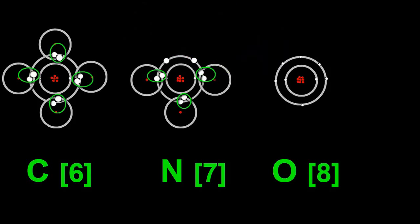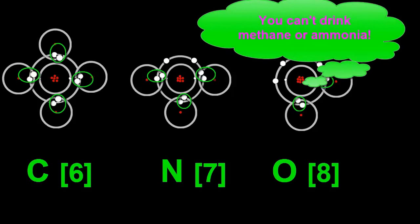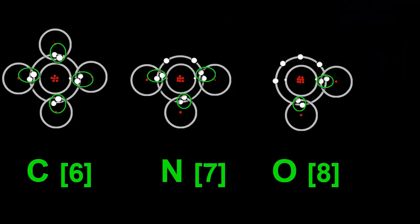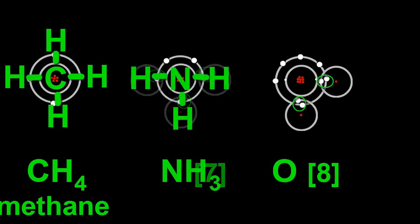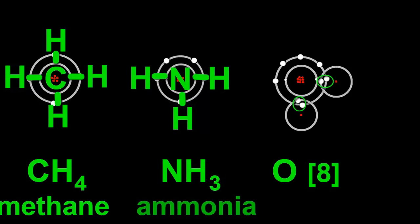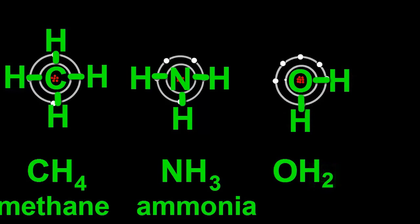Oxygen has six valence electrons and needs to share with two to fill up. So it bonds with two Hydrogens. Carbon joins with Hydrogen to make CH4, Methane. Nitrogen joins to Hydrogen to make NH3, Ammonia. And Oxygen bonds with Hydrogen to make OH2, or better known as H2O, Water.